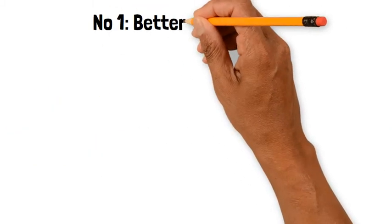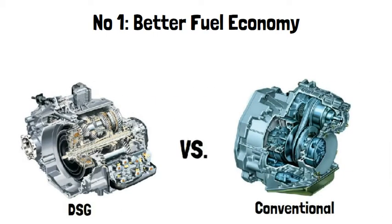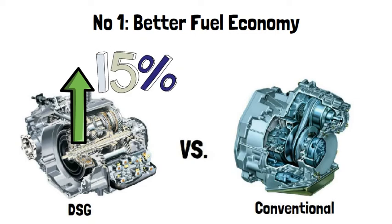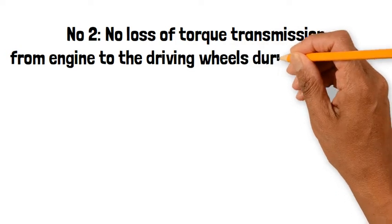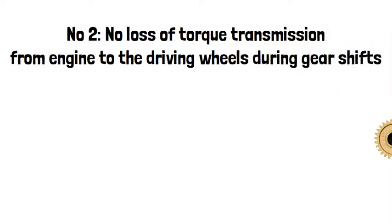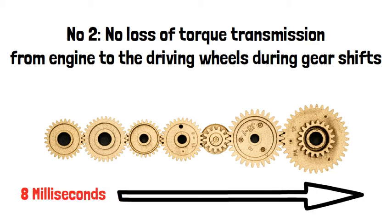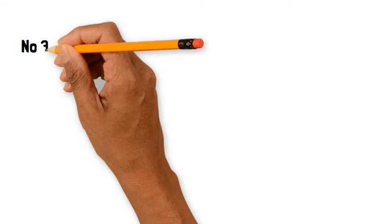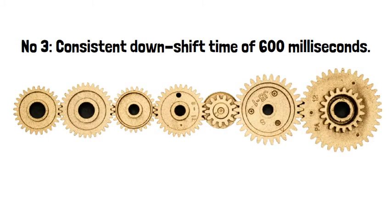Number one, petrol fuel economy. Up to 15% improvement over conventional planetary gear automatic transmission, with lower parasitic losses from oil churning compared to some models with manual transmissions. Number two, no loss of torque transmission from engine to the driving wheel during gear shifts. Short upshift time of 8 milliseconds when shifting to a gear. The alternate gear shift is pre-selected, giving smoother gear shift operations. Number three, consistent downshift time of 600 milliseconds, regardless of throttle or operational mode.